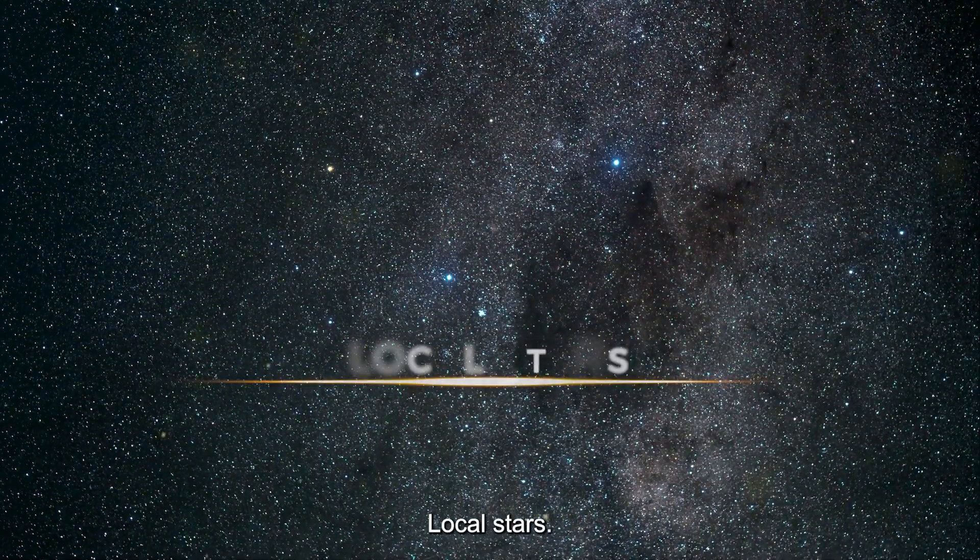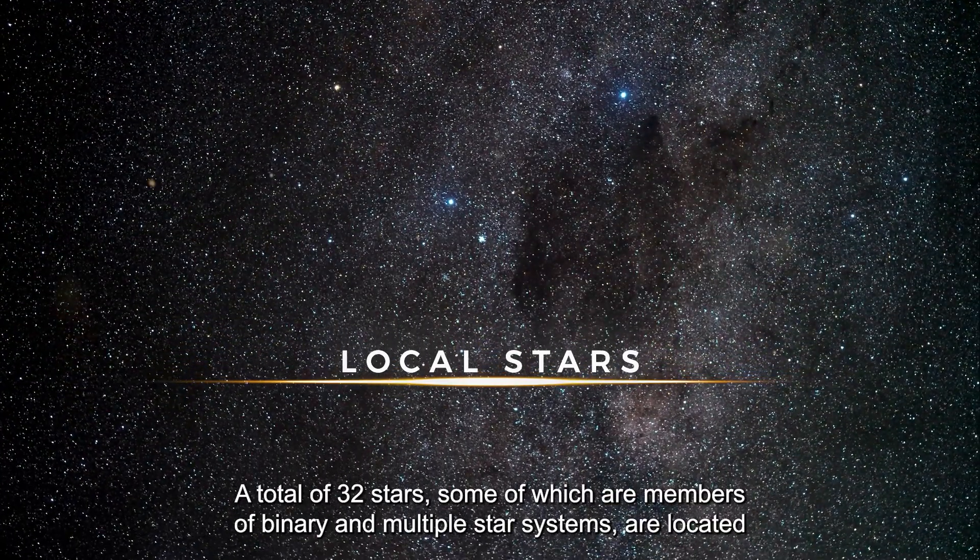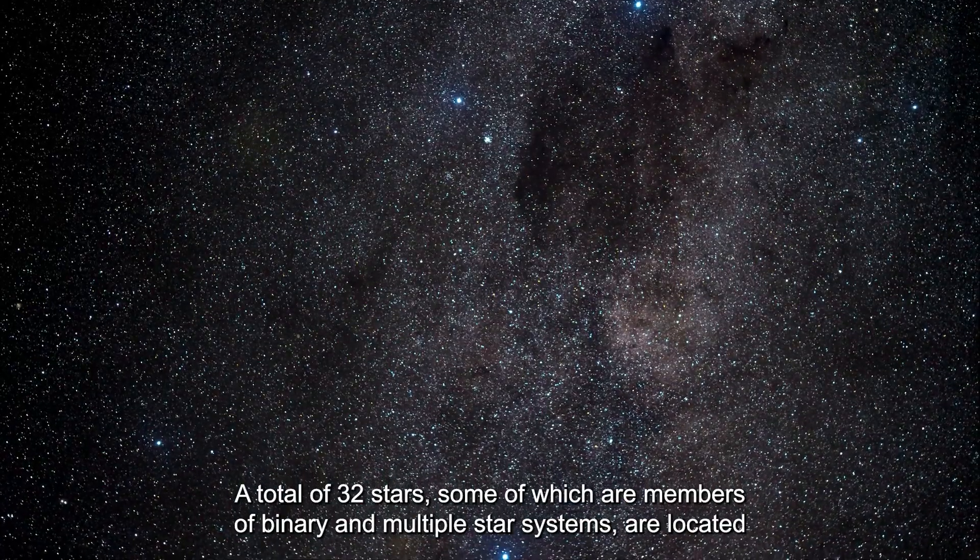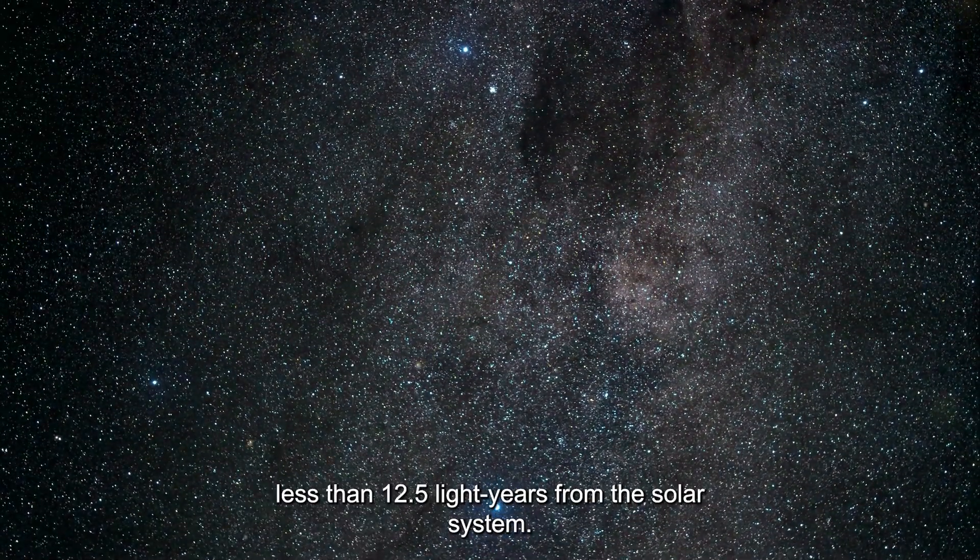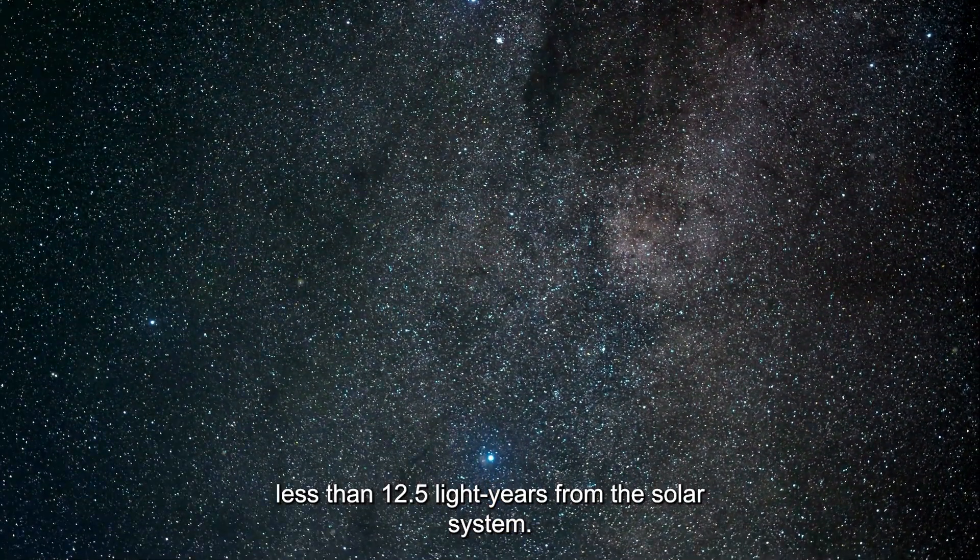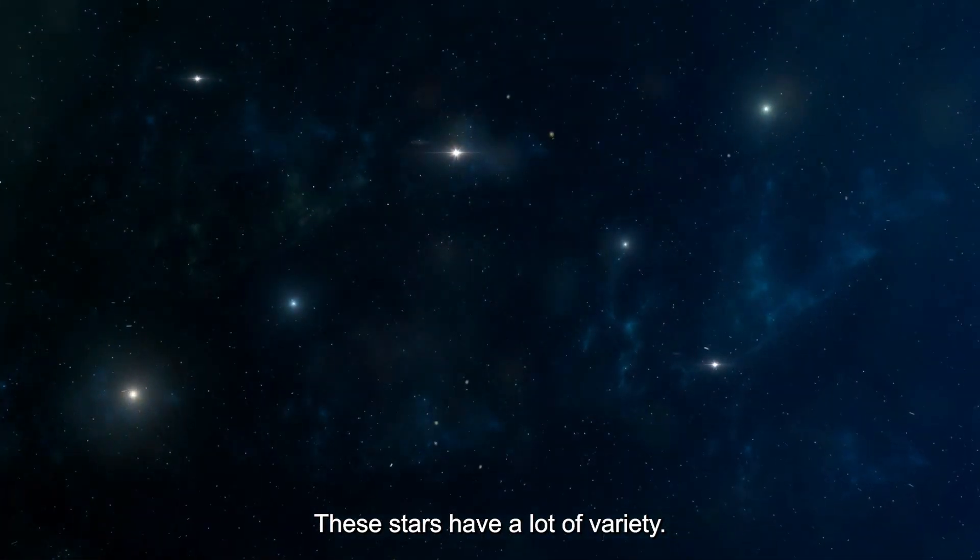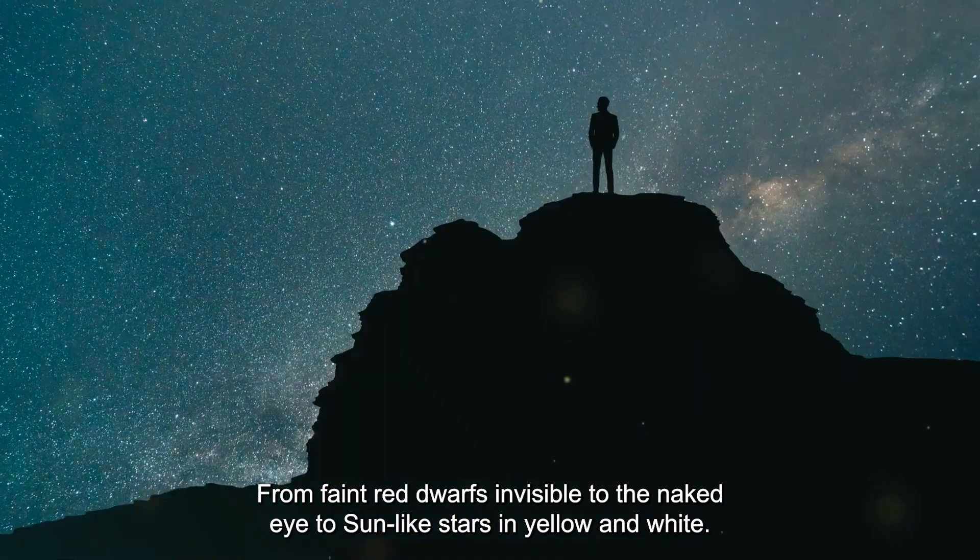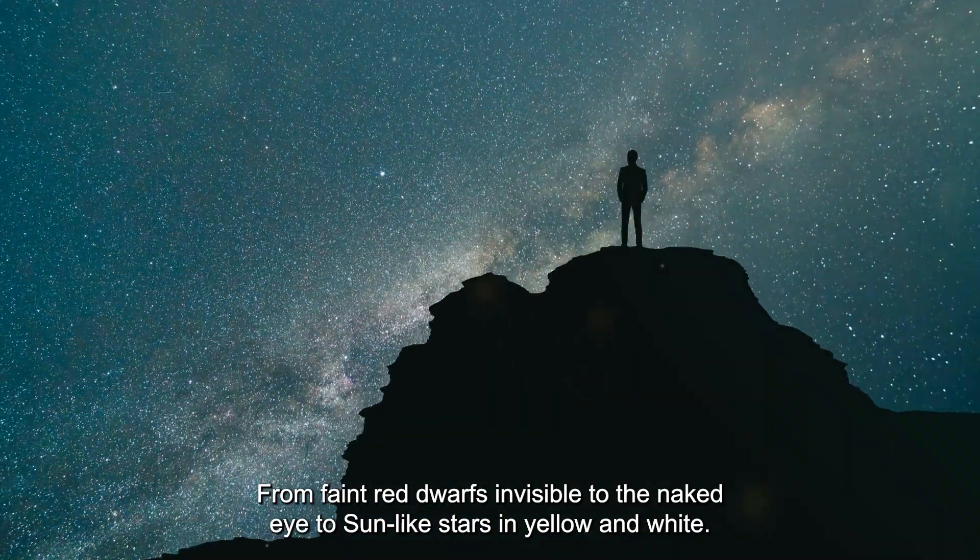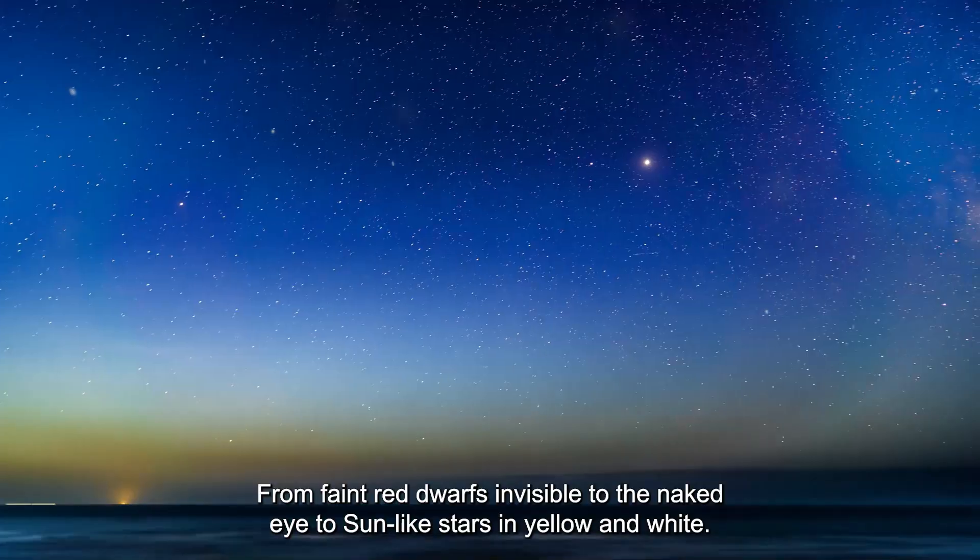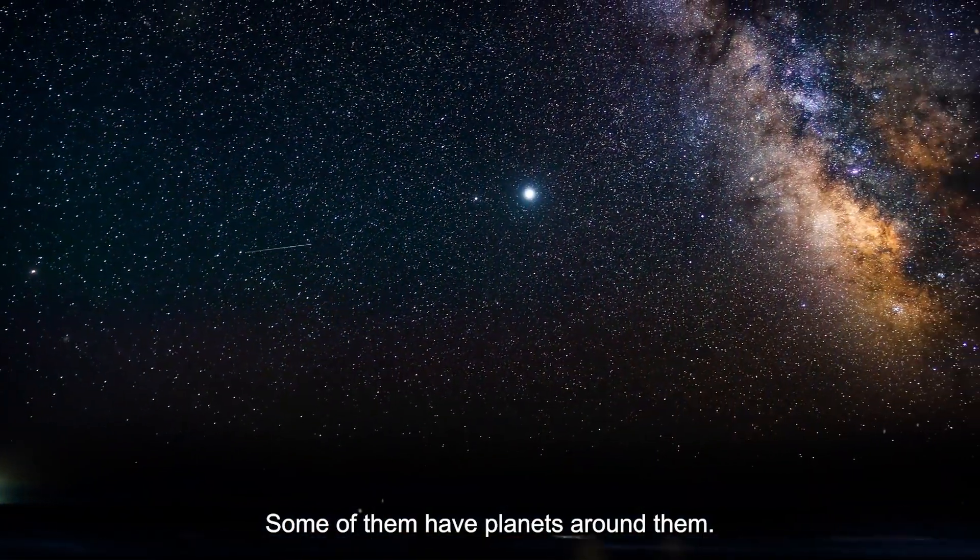Local stars. A total of 32 stars, some of which are members of binary and multiple star systems, are located less than 12.5 light years from the solar system. These stars have a lot of variety. From faint red dwarfs invisible to the naked eye to sun-like stars in yellow and white. Some of them have planets around them.